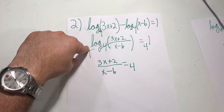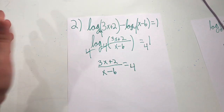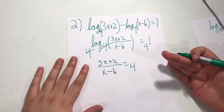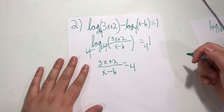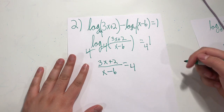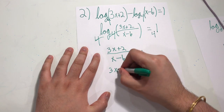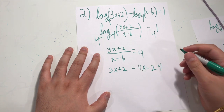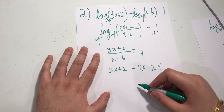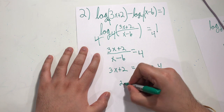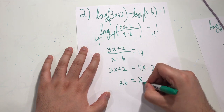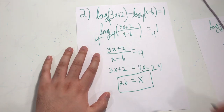What we're basically doing is converting from logarithmic form to exponential form. From here, multiply both sides by x minus 6, giving 3x plus 2 equals 4x minus 24. Adding 24 to both sides gives 26 on the left, and subtracting 3x gives just 1x on the right, so x equals 26.